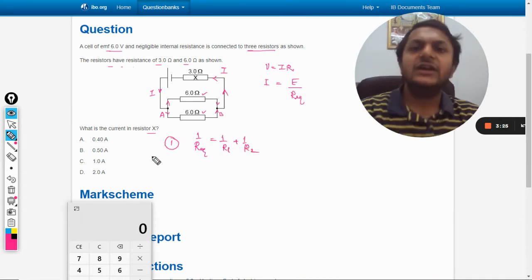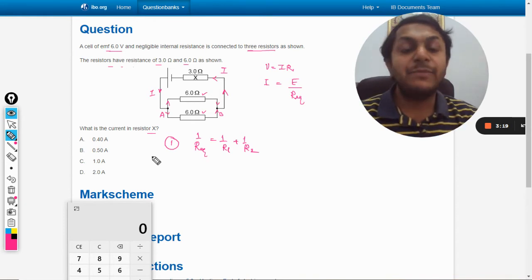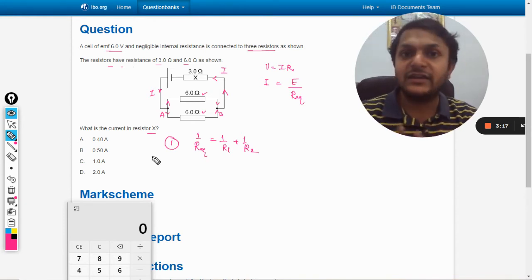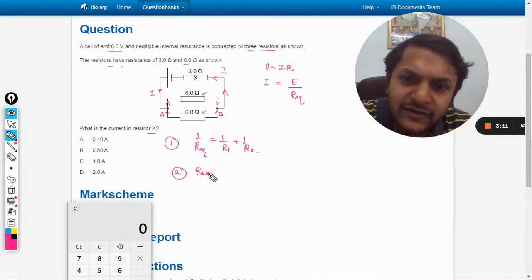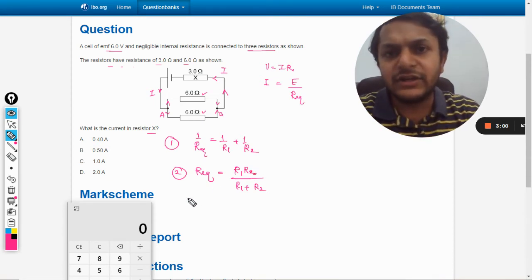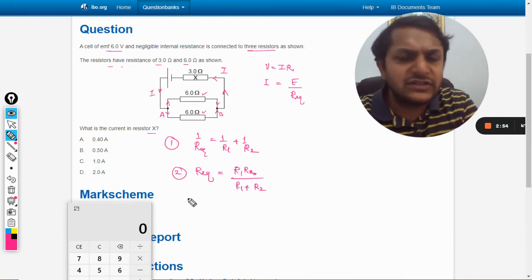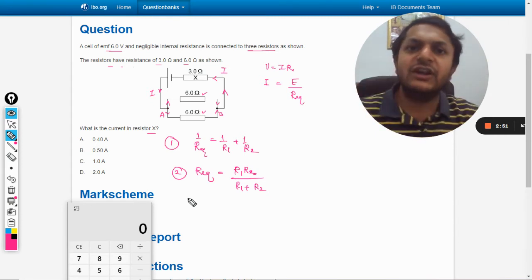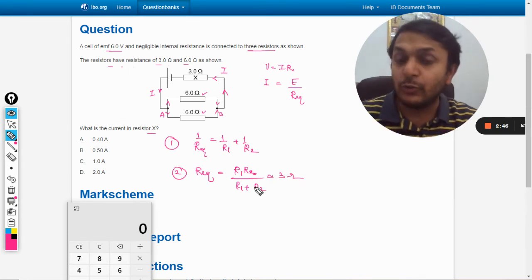There are three methods to quicken our calculation. This is the first method but many students make clerical mistakes while using this method. So we can simplify this further and take the reciprocal of it. So R equivalent is given by R1 times R2 divided by R1 plus R2. This formula can be used for two resistances when two resistances are in parallel. This becomes very quick: 6 into 6 is 36, 6 plus 6 is 12, 36 divided by 12 is 3. So straightforward I can say that this will be coming out to be 3 ohms.